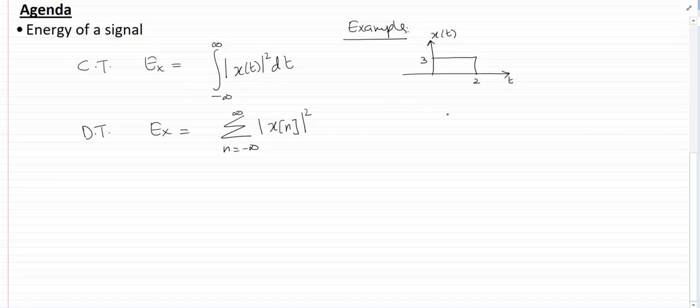Well, if we go by this formula over here, we'll have Ex equal to the function x(t), which we can say is 3 in this range. The mod of 3 is 3, and squaring 3 will get 9. The function x(t) is only giving non-zero values from t=0 to 2, so the limits change from minus infinity to infinity to 0 to 2.